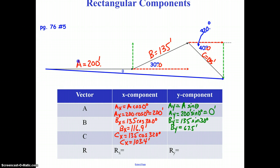Let's go ahead and do the x component of C: 135 cosine of 320 degrees. So Cx equals 103.4 feet. If you had done that with 40 degrees, you would have gotten the same exact answer. However, let's do Cy: 135 sine of 320 degrees. So Cy equals negative 86.8 feet.